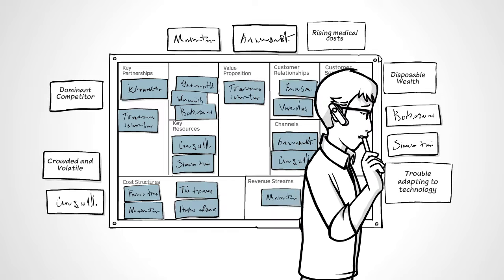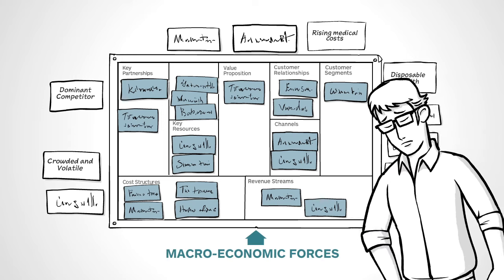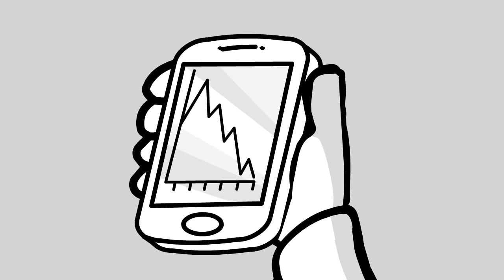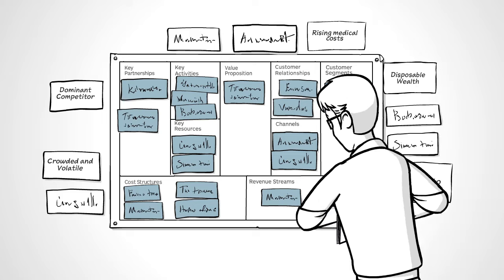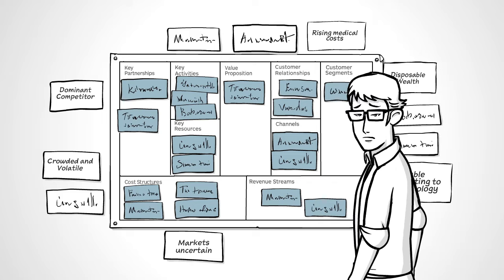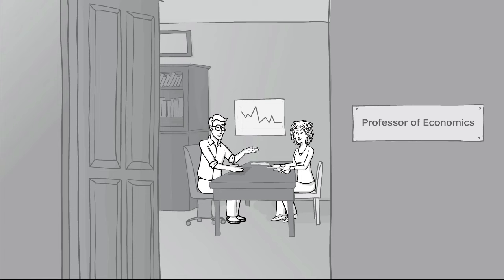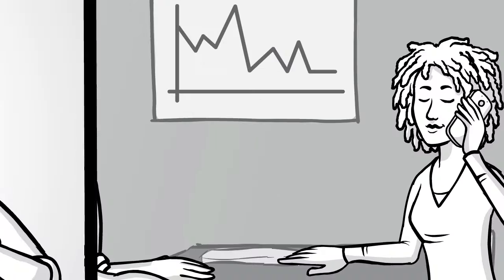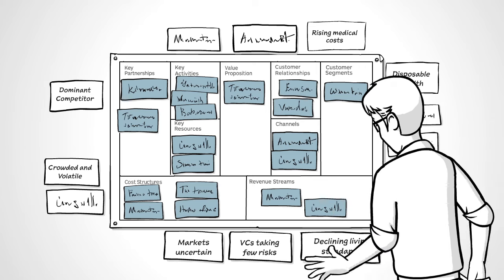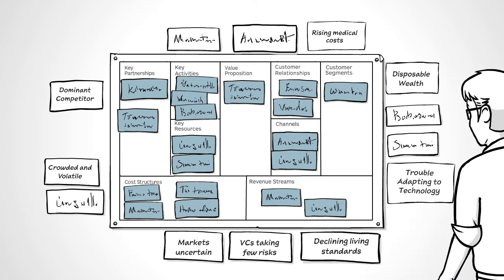Finally, below your canvas, map macroeconomic forces. How is the global economy doing? Markets may be in a state of rampant uncertainty. How available is capital? Venture capitalists may be taking few risks. How well is the infrastructure developed in the market you are doing business in? Sure, many boomers are experiencing a decline in living standards.